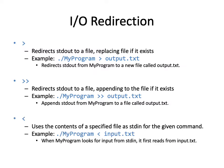Next we have the '<' operator. This works in reverse: it takes the contents of a specified file as standard input for the given command. So if I have './myprogram < input.txt', before my program looks to the keyboard for input it will first grab all the input it can from input.txt. If the program is still looking for input and has reached the end of input.txt, it'll then start reading from the keyboard.